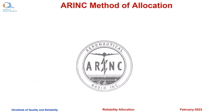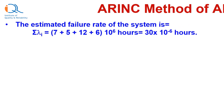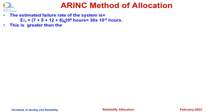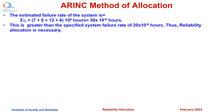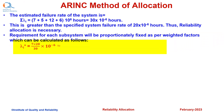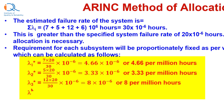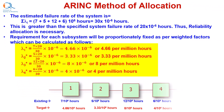Let us now solve the previous example using the ARINC method of allocation. The estimated failure rate of the system is the summation of all failure rates, which we have already seen is 30 per million hours. This is greater than the specified system failure rate of 20 per million hours. Therefore, reliability allocation is necessary. Requirements for each subsystem will be proportionately fixed as per weighted factors. Lambda 1 star = 7 × 20/30 = 4.66 per million hours. Similarly, lambda 2 star, 3 star, and 4 star can be calculated as 3.33, 8, and 4 per million hours respectively. Further allocation can occur when additional information becomes available.